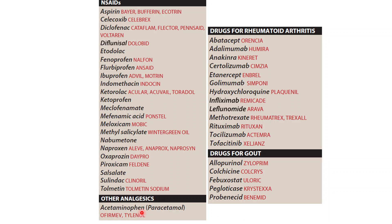There is also acetaminophen, or paracetamol. It has the same mechanism of action as NSAIDs but differs in chemical structure. The drugs used to treat rheumatoid arthritis include specific drugs and also immunosuppressive drugs.